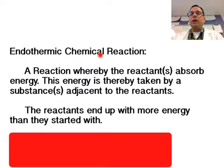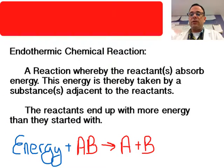So let's take a look at the definition for endothermic. An endothermic chemical reaction, unlike an exothermic, is a reaction whereby the reactants absorb energy. This energy is thereby taken by a substance or substances adjacent to the reactant. So whatever is in the immediate environment will lose energy to that substance. So the reactants end up with more energy than they started with, and it could be identified such as this. So here we have energy being added to substance AB. So AB is now absorbing this energy to become yielding substance A plus B.